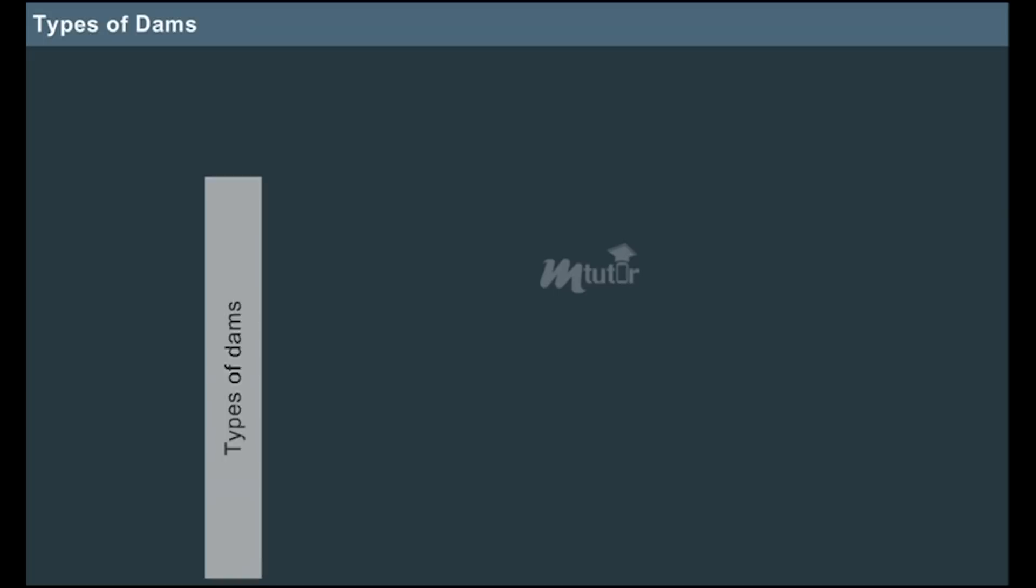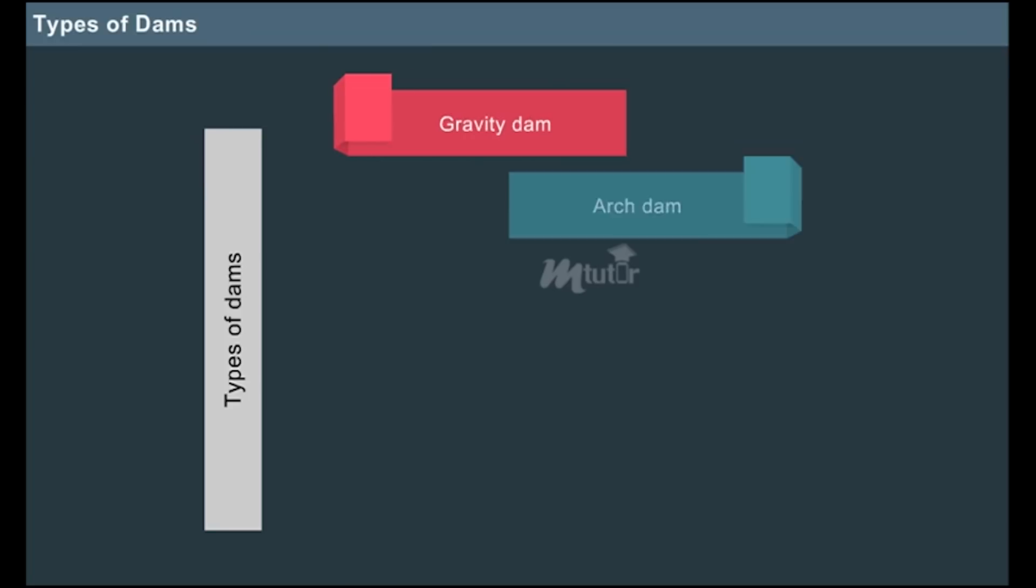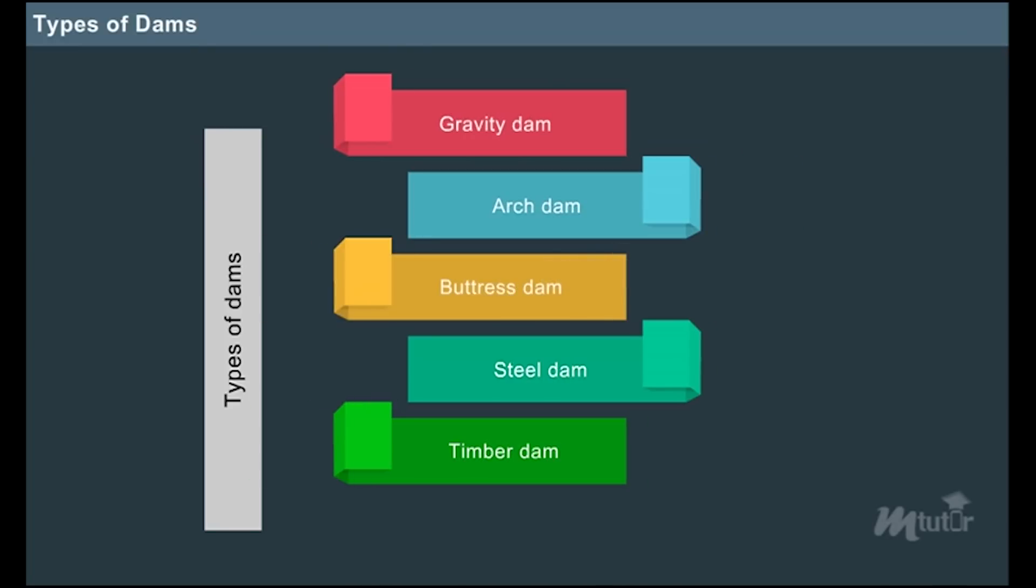There are different types of dams which include gravity dam, arch dam, buttress dam, steel dam, timber dam, and earth and rock fill dam.